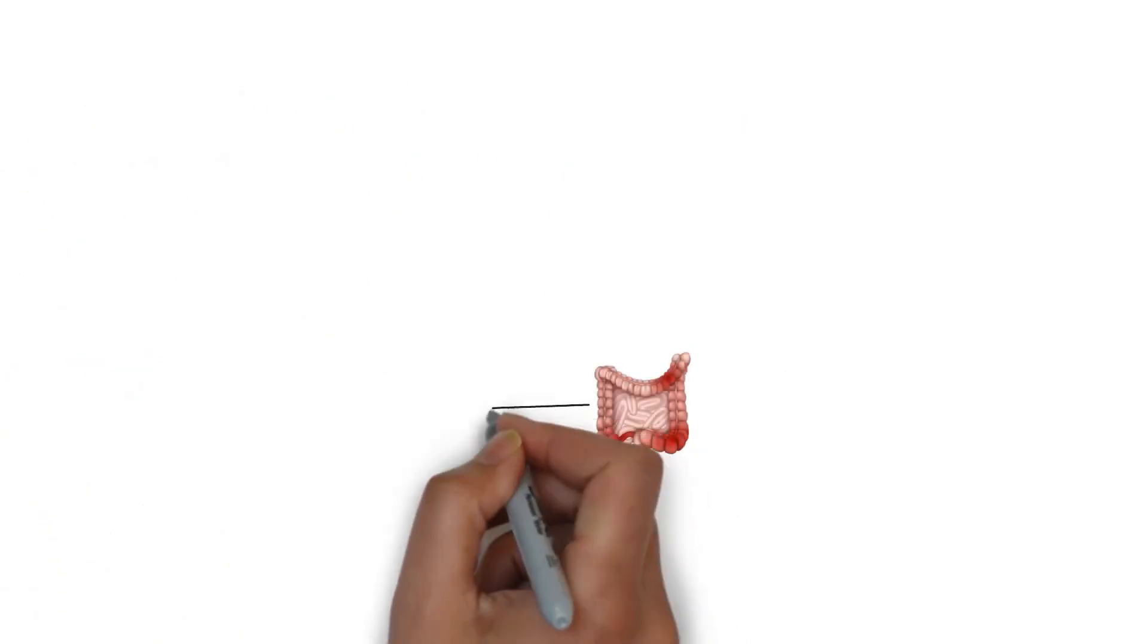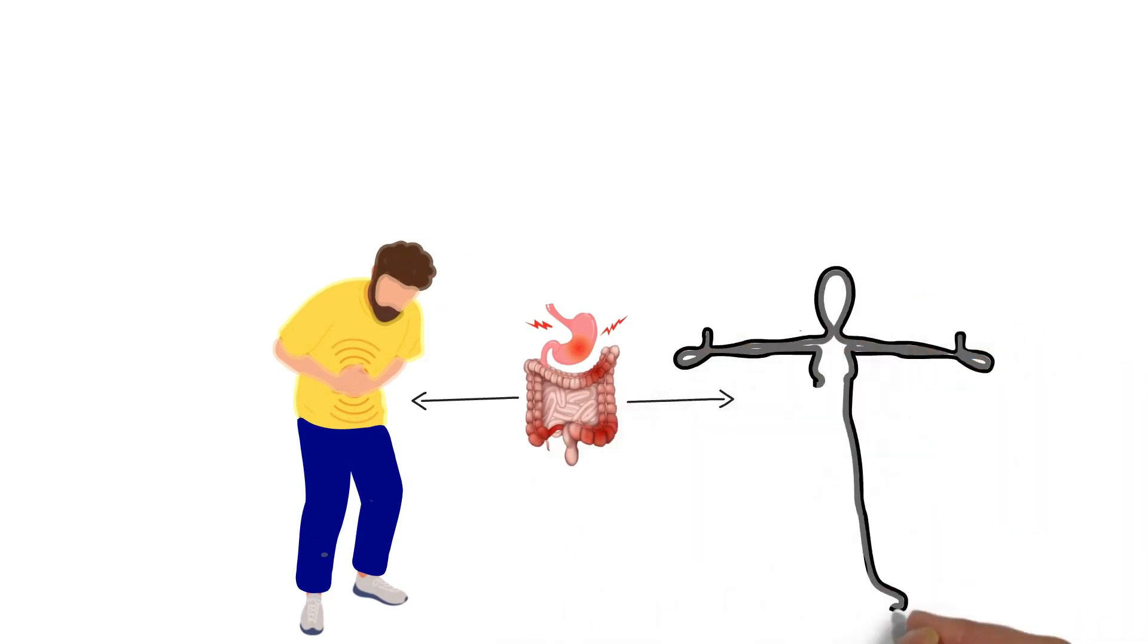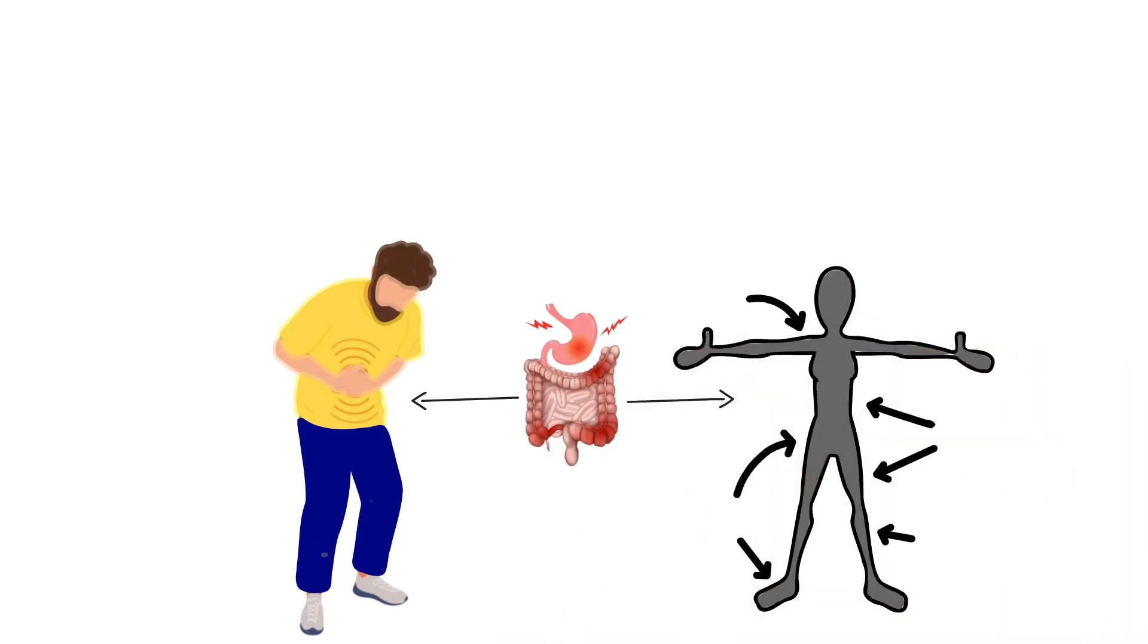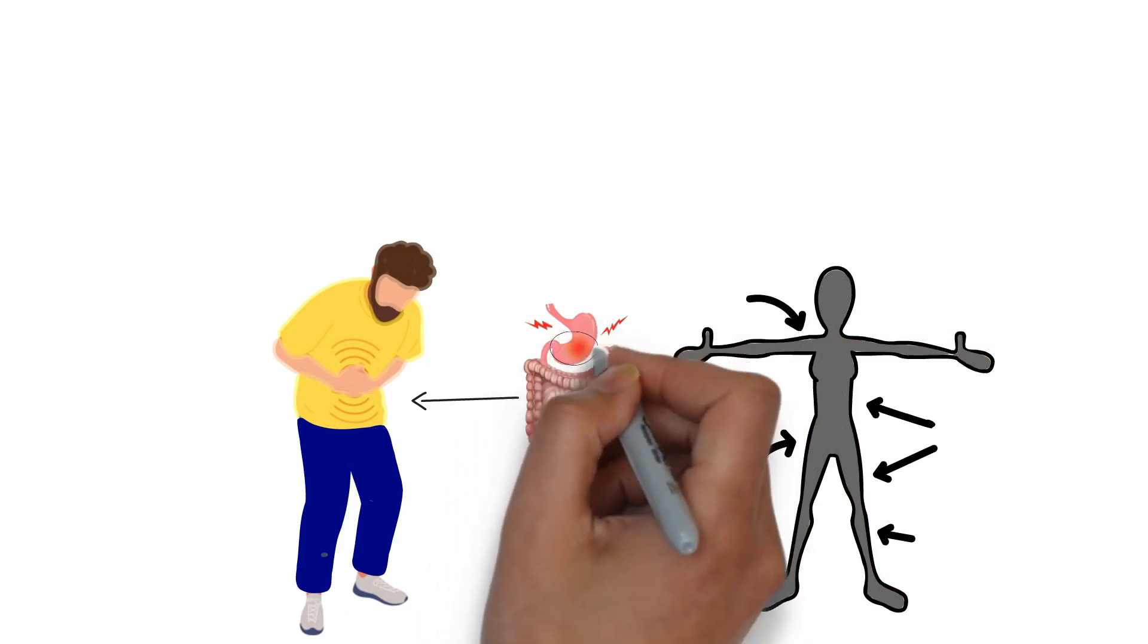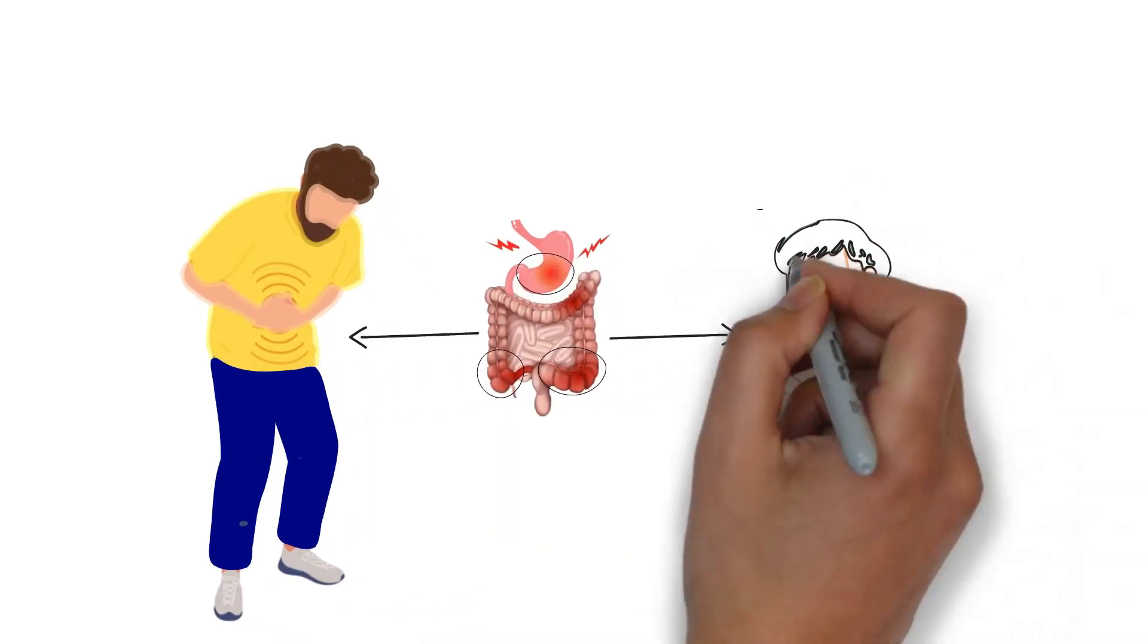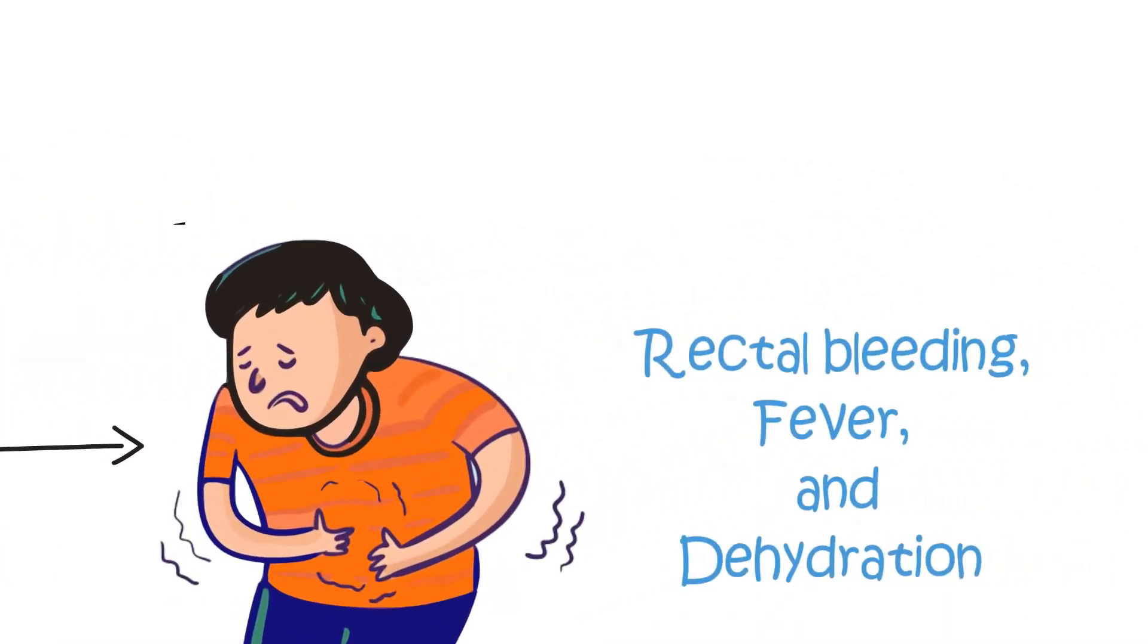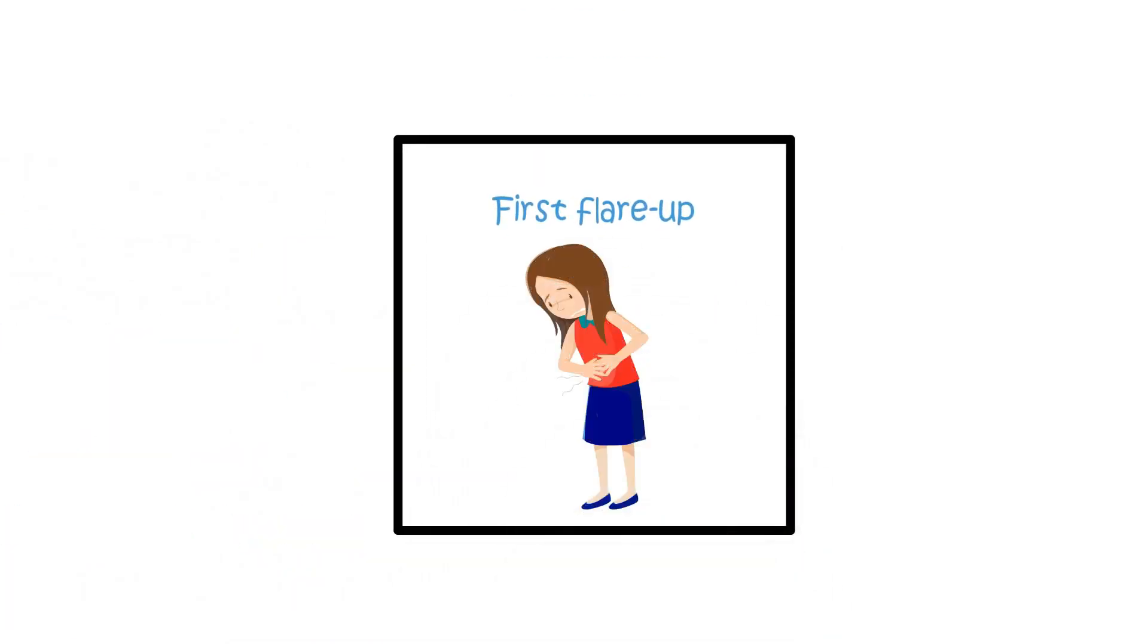When a relapse or flare-up of Crohn's hits, it's like a storm brewing in your gut. The inflammation in areas of the gastrointestinal tract becomes more active, and your body starts to send out warning signals in the form of symptoms. These can vary dramatically depending on which area or areas of the gut are affected. The symptoms can range from mild discomfort to more severe issues like rectal bleeding, fever, and dehydration.